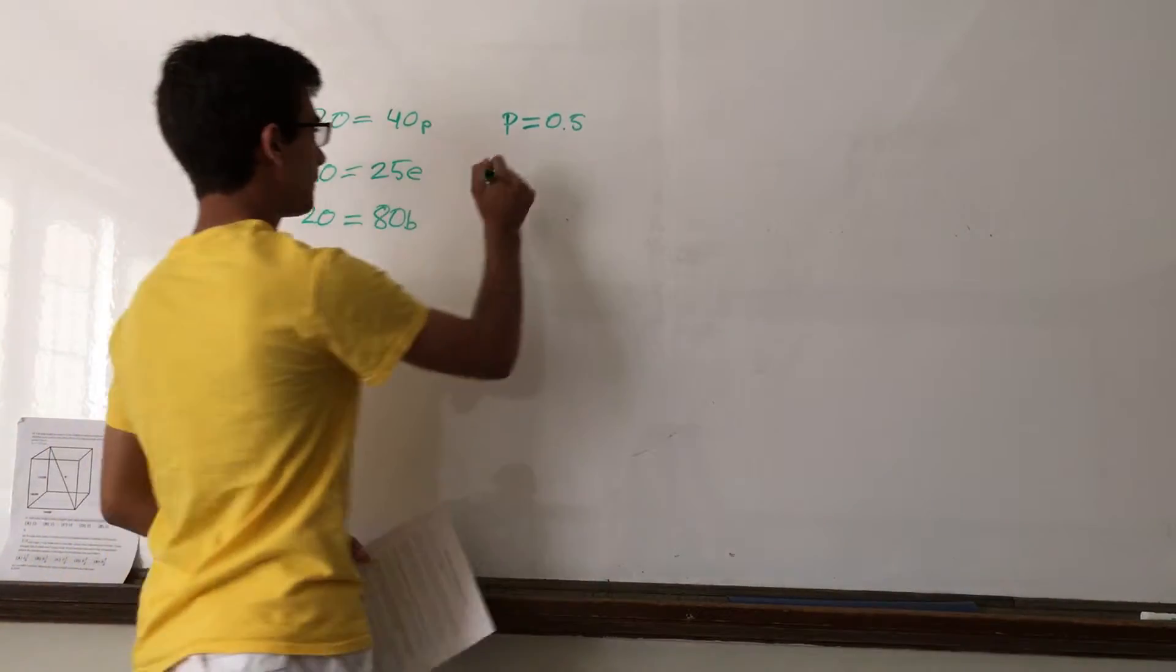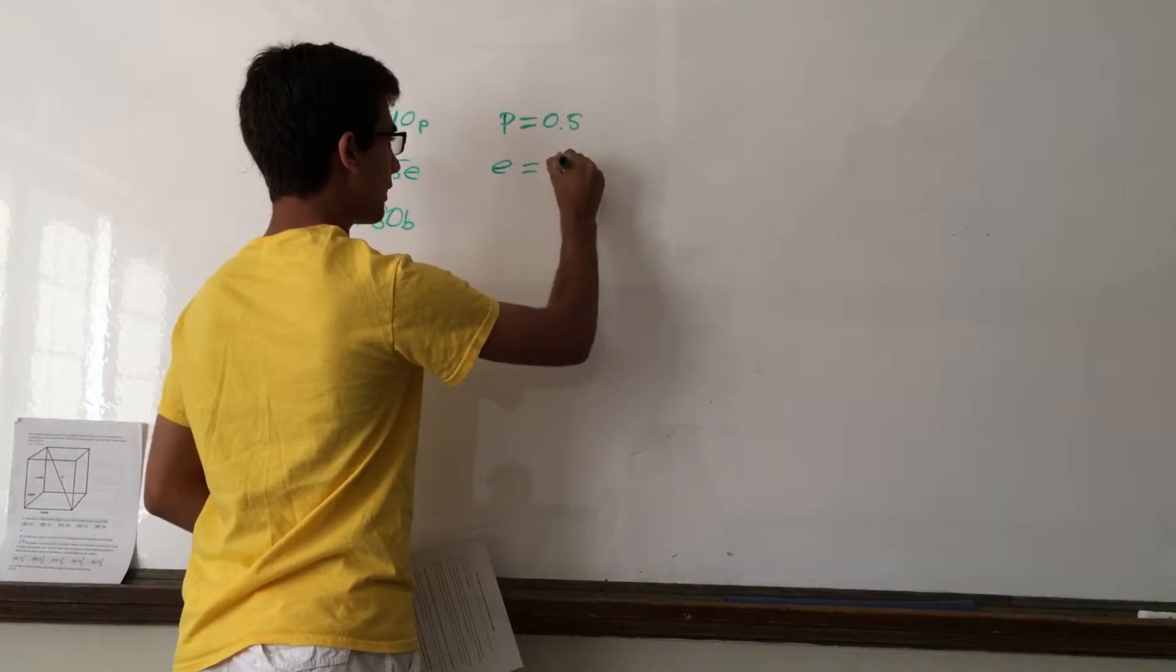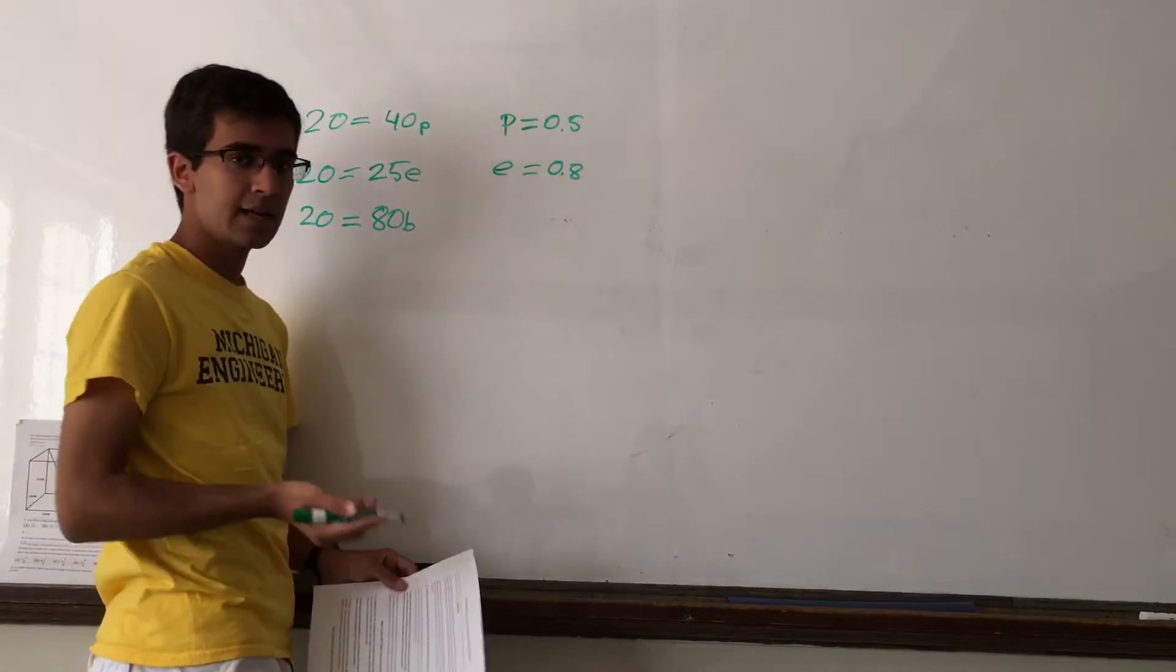Now, we can solve this by dividing 20 over 25. So, E must be 0.8. The price of an eraser is 80 cents.